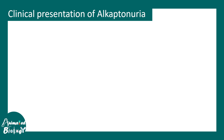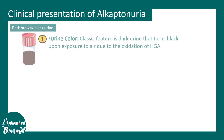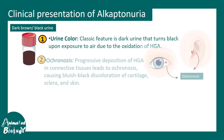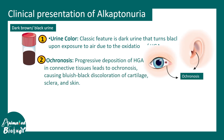Let's talk about the clinical presentation of alkaptonuria. Urine color is one of the key deterministic features. Ochronosis — that is, progressive deposition of HGA in connective tissues — leads to a bluish-blackish appearance in the cartilage, sclera, or skin, and is also a prominent feature of alkaptonuria.